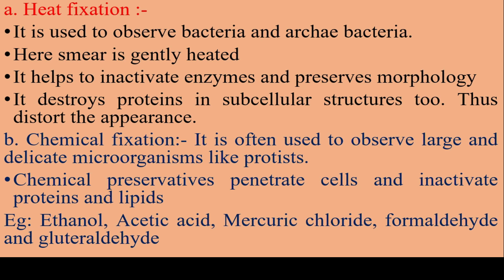What is chemical fixation? It is often used to observe large and delicate microorganisms like protists. Chemical fixation is used in the case of protists, while heat fixation is normally used in the case of bacteria and archaea — archaea means ancient bacteria. Chemical preservatives penetrate cells and inactivate proteins and lipids inside the cell. Examples of chemical fixatives are ethanol, acetic acid, mercuric chloride, formaldehyde, and glutaraldehyde.